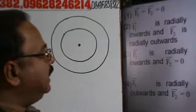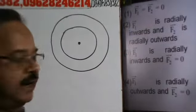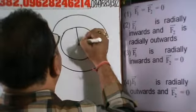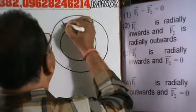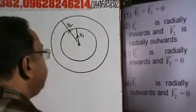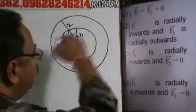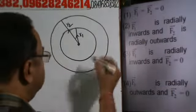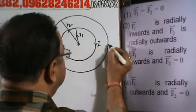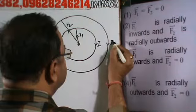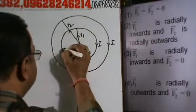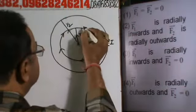These are solenoids of different radii. If this solenoid has radius R1 and this solenoid has radius R2, both are carrying current in the same direction — both in the clockwise direction.